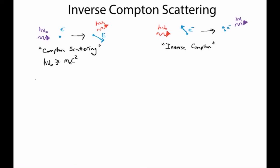For the Compton scattering case, we found that the change in wavelength of the outgoing photon versus the incoming photon was given by the Compton wavelength times a factor that took into account the angle with which the exiting photon left relative to the incoming photon — this 1 minus cosine phi term. The Compton wavelength is defined to be h over the mass of the electron times the speed of light, and it is of order two hundredths of an angstrom.